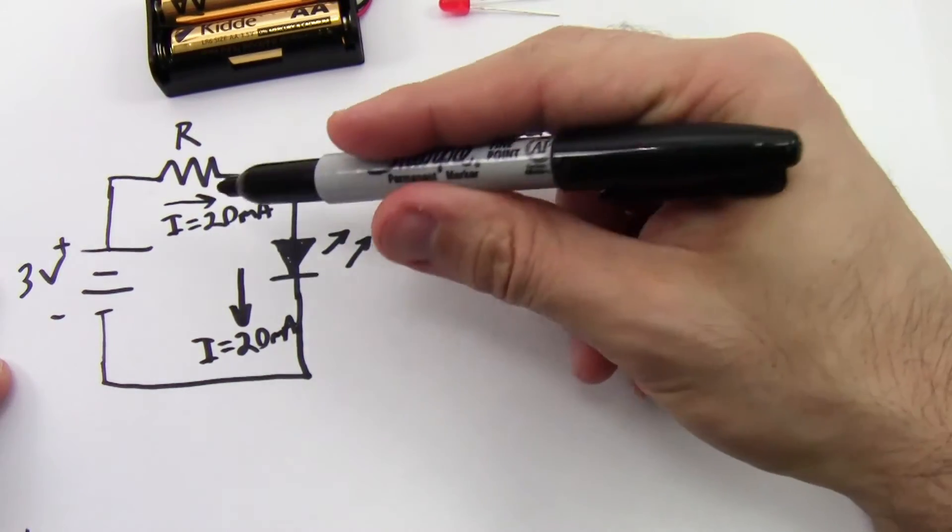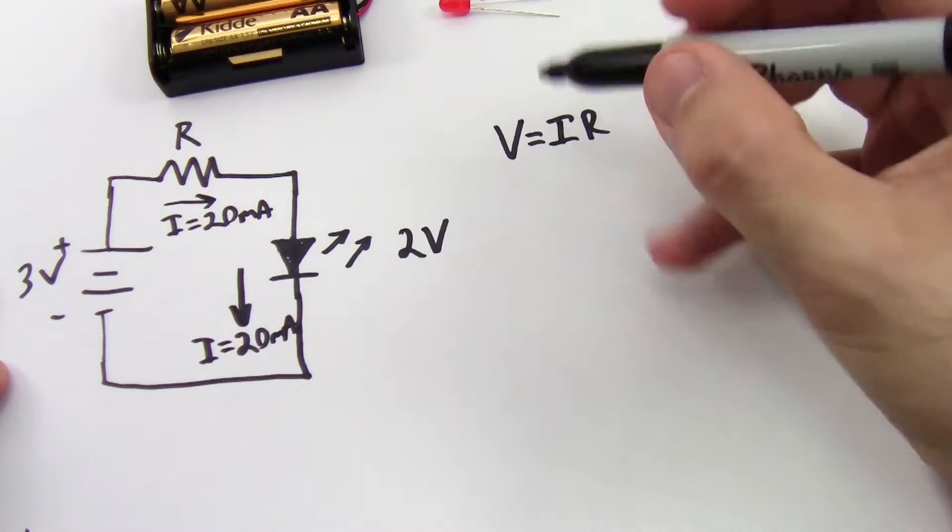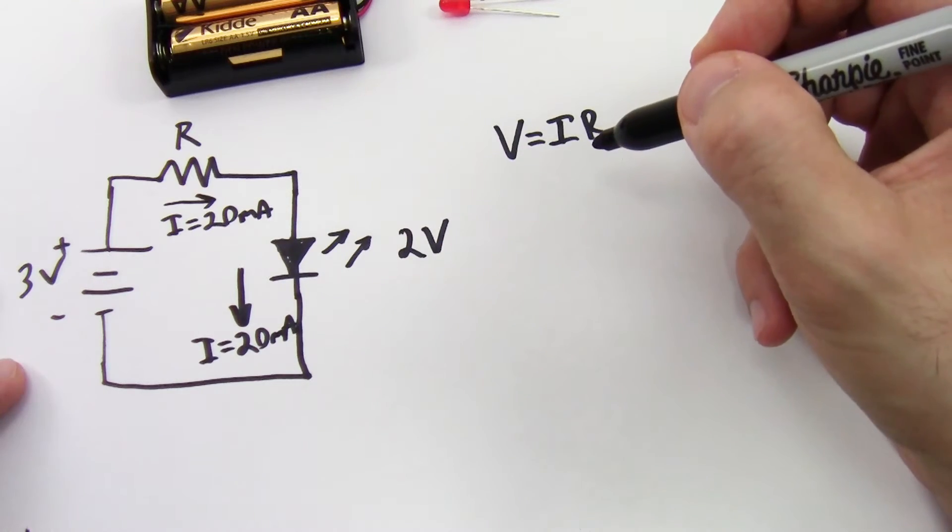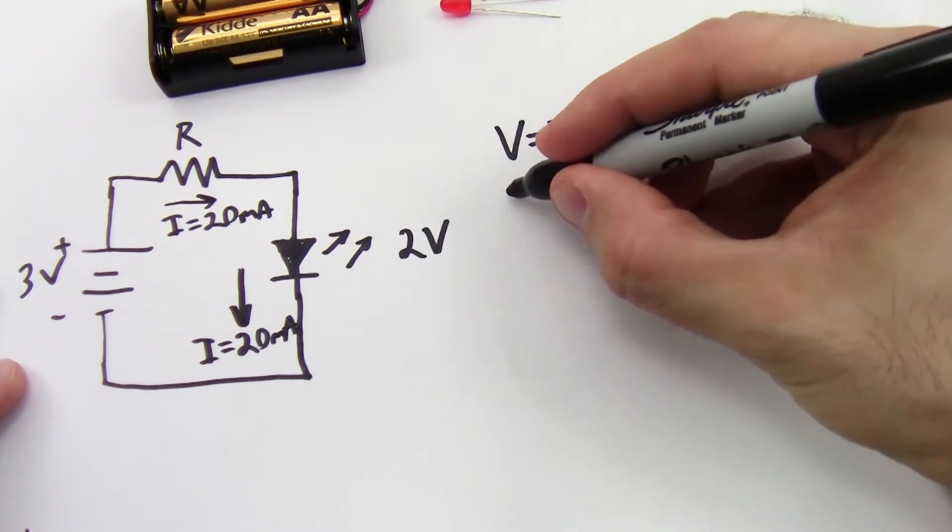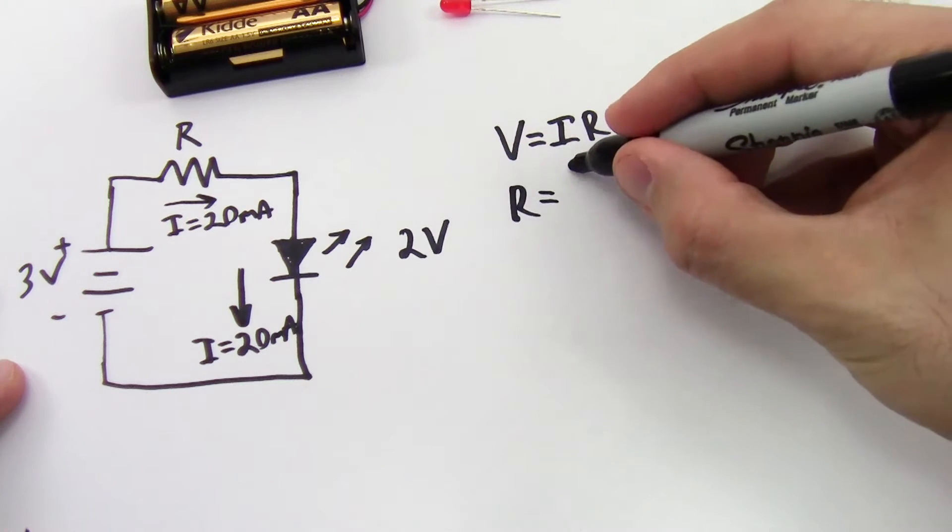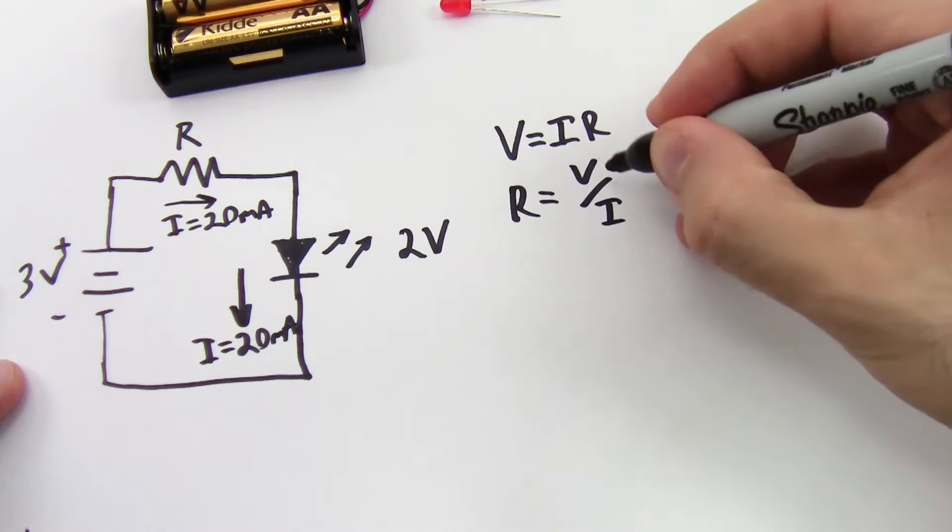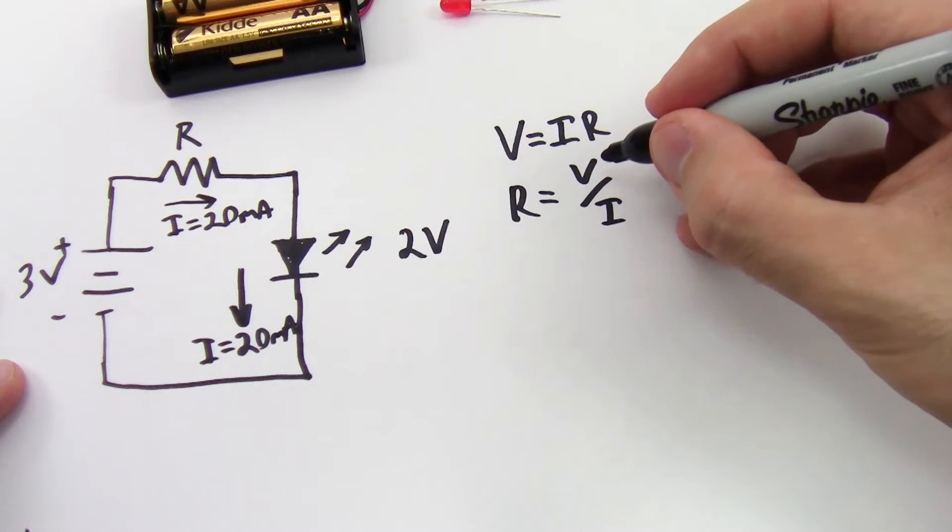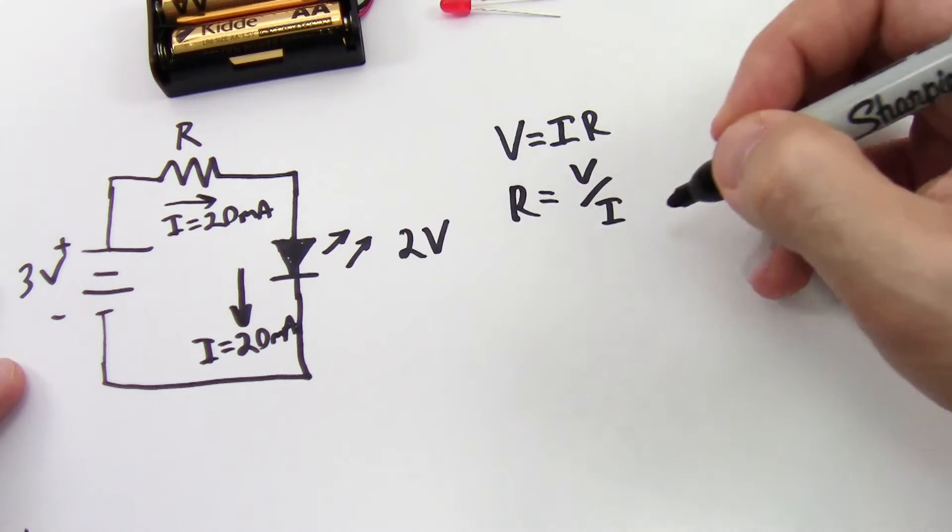So I know all the voltages and I know the current in this circuit. I can use this equation to calculate my required resistance. Rearrange that to be R equals V over I, where V is the voltage drop across the resistor and I is the current through the resistor.